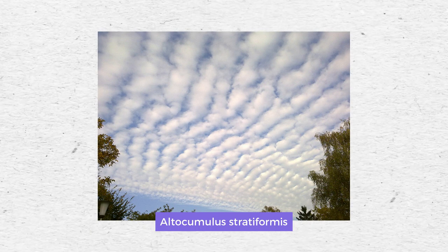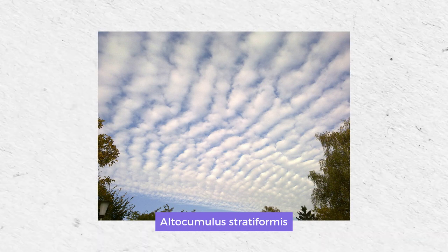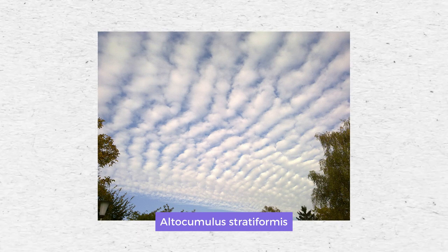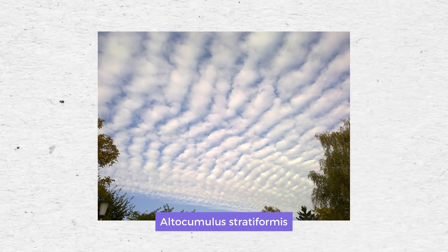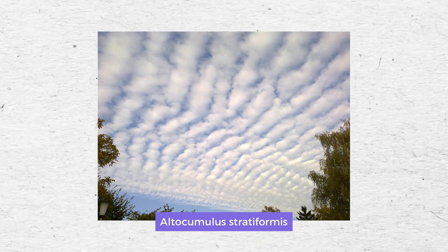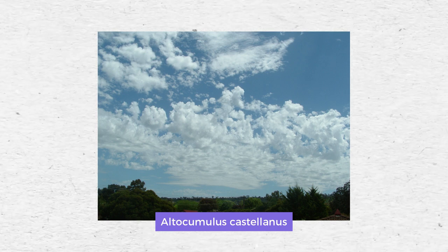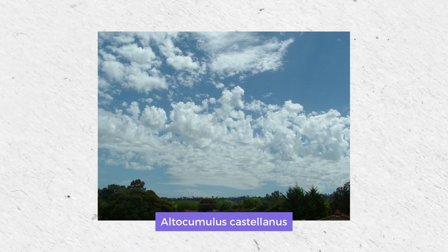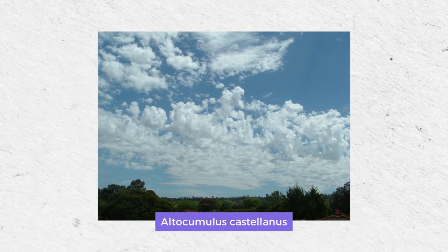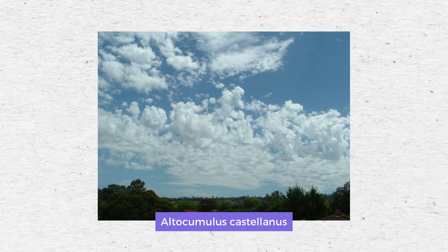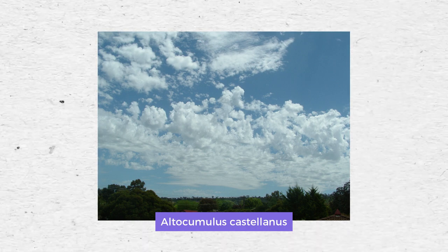Altocumulus stratiformis is an extensive sheet or layer of separate or merged elements. This is by far the most frequently occurring species of altocumulus. Altocumulus castellanus clouds take their name from their resemblance to the turrets of castles and are often a warning of thunderstorms.